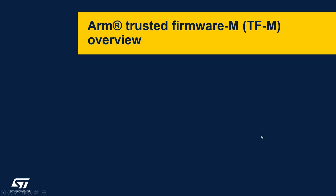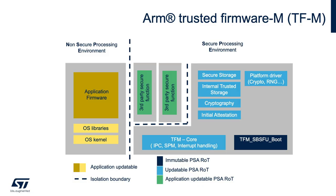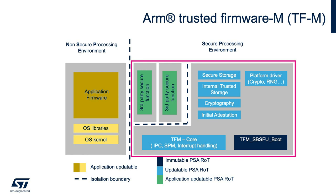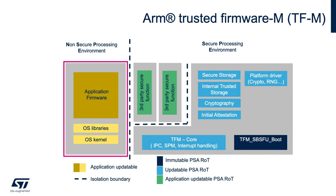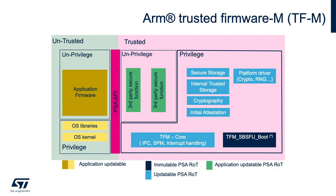This section will focus on the details of the TFM code architecture. This figure shows the building blocks of the solution and the isolation boundaries between them. The ARM TFM specification divides the architecture into two worlds: the secure processing environment, which includes the SBSFU root of trust and the TFM core and services, and the non-secure processing environment, which includes the application firmware and associated drivers. The isolation between these two worlds is guaranteed by the ARM TrustZone, configured to treat the secure processing environment as trusted and the non-secure as untrusted. An additional isolation level is achieved through the privileged and unprivileged secure attribute, allowing for additional isolation boundaries inside each of the two worlds.